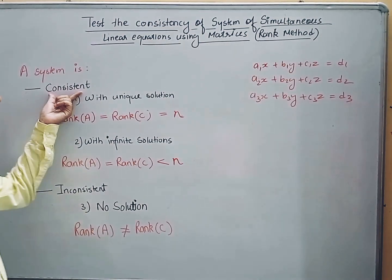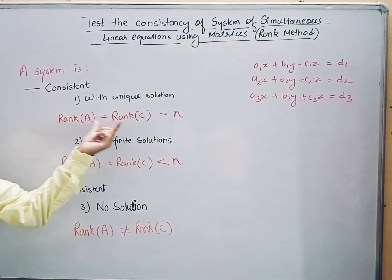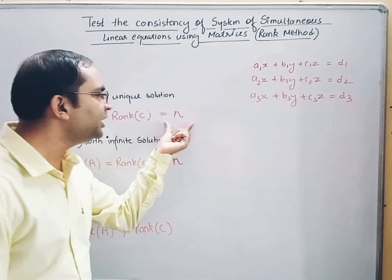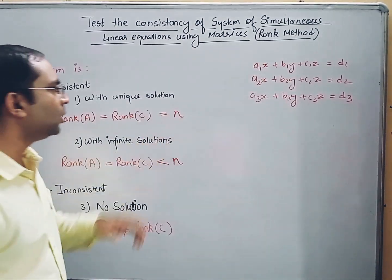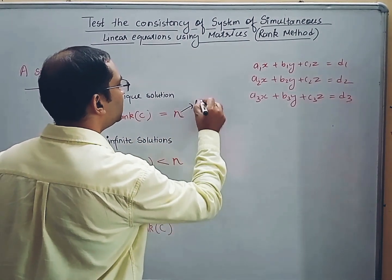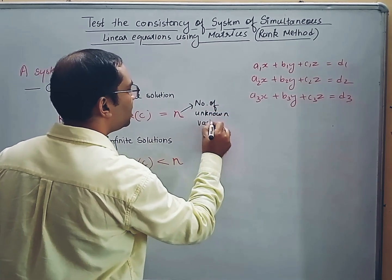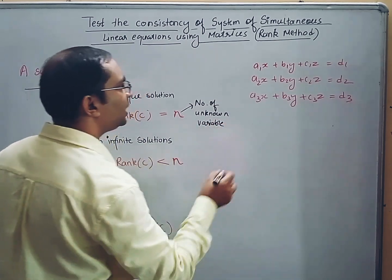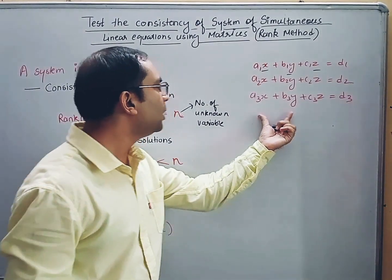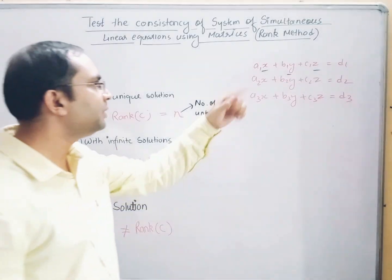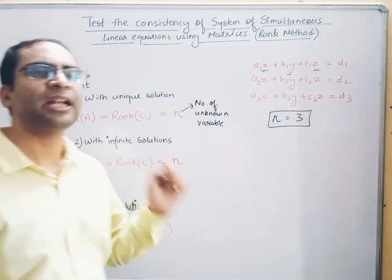The system will be consistent with a unique solution whenever the rank of matrix A equals the rank of matrix C, which is again equal to n. Here n is the number of unknown variables. In our example we have x, y, and z — three unknown variables — so the value of n is 3.